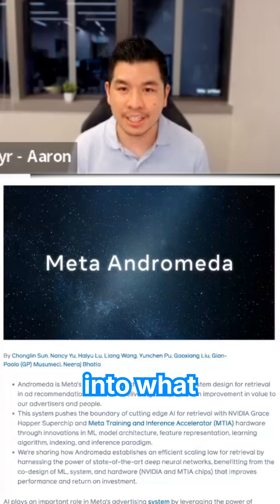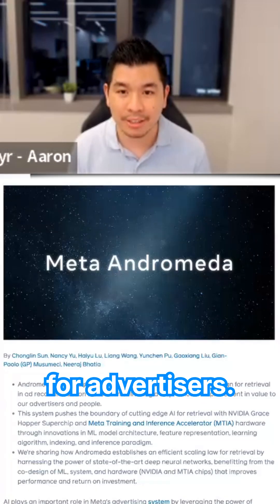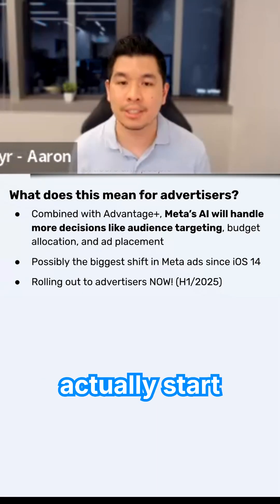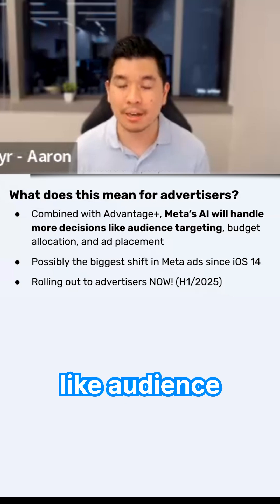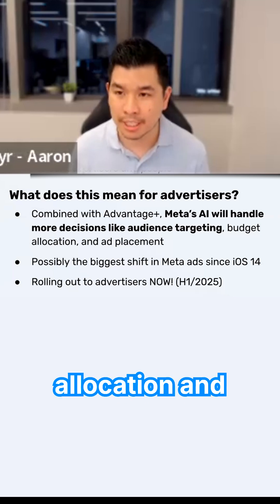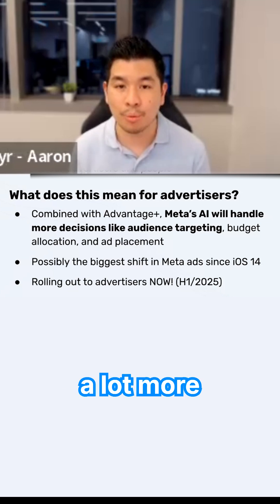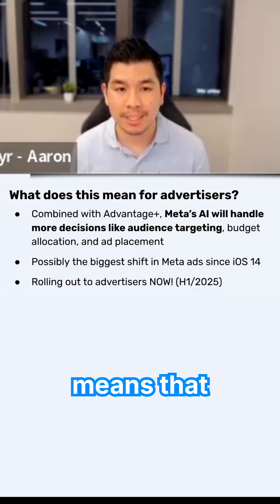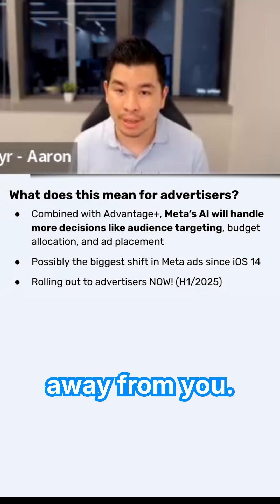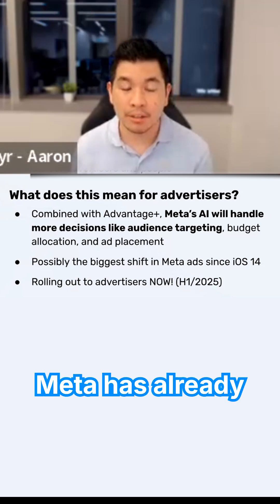Let's translate that into what this actually means for advertisers. Meta's AI will start to handle many more decisions like audience targeting, budget allocation, and ad placement. So Meta's AI will do a lot more work for you, but that also means they'll take a lot of the control away from you.